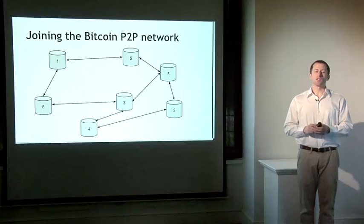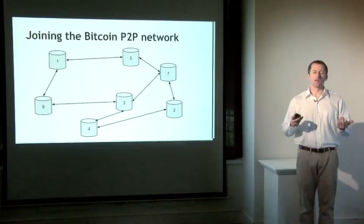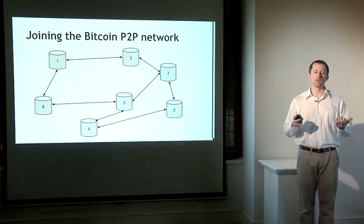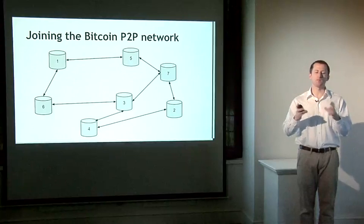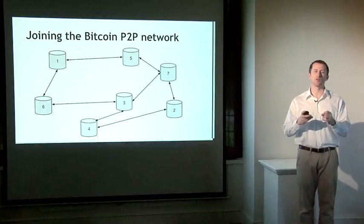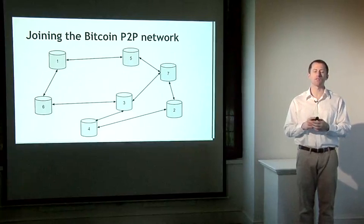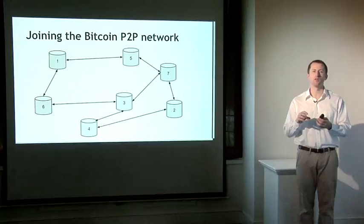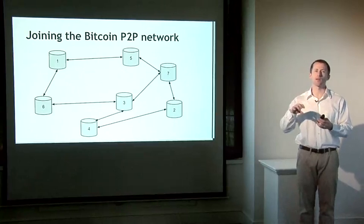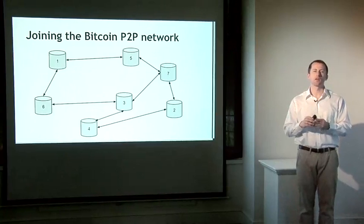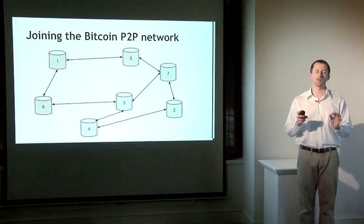What does it mean that you can simply join the Bitcoin peer-to-peer network at any time? If this is a picture of the network at one moment in time — obviously scaled down quite a bit with just seven nodes — this is a picture of what it might look like: seven nodes with all random connections to each other. The numbers are scattered around because there's no geographic topology.